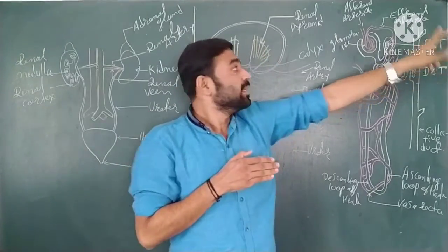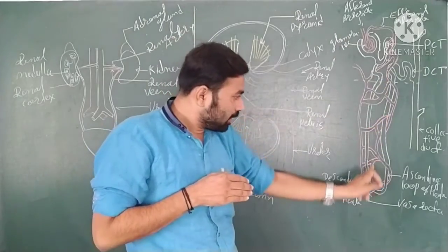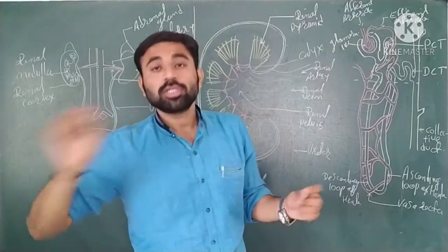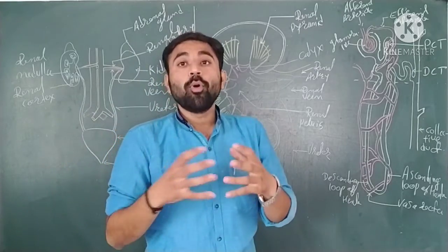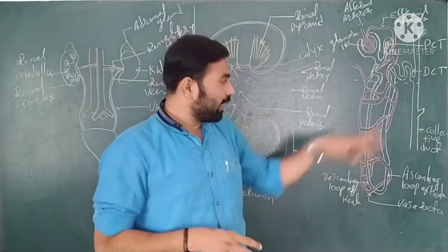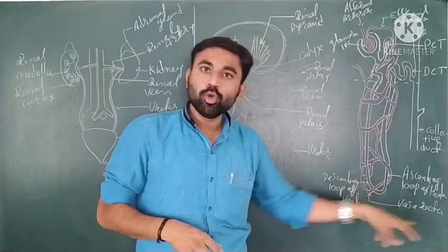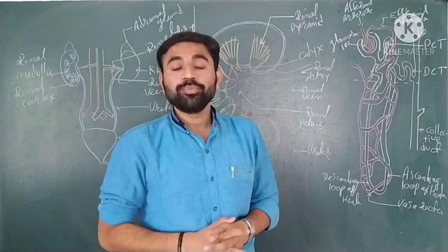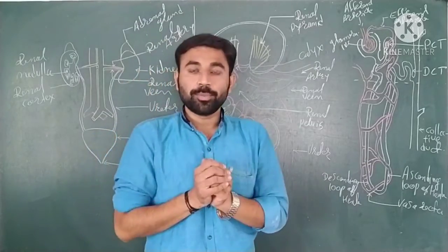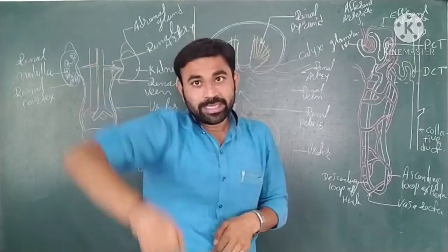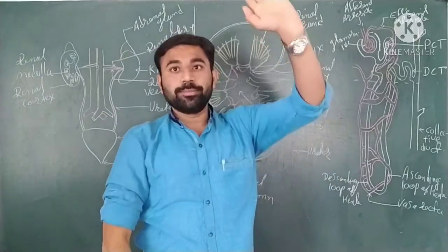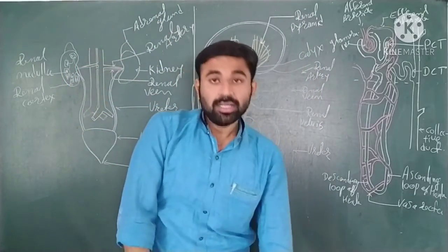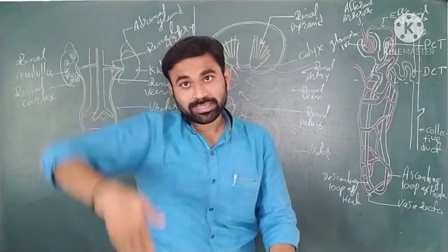After the PCT, there is a long region where the tubule becomes smaller and smaller — this is known as the loop of Henle. The loop of Henle is U-shaped and has two parts: the descending part and the ascending part. After the PCT comes the descending part, and then the ascending part leads toward the DCT.